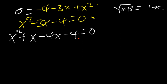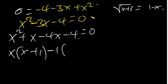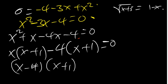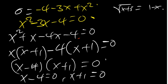We factor by grouping. From the first two terms we factor out x, giving x(x plus 1), and from the last two terms we factor out negative 4, giving negative 4(x plus 1). So we have (x plus 1)(x minus 4) equals 0, which means x plus 1 equals 0 or x minus 4 equals 0.